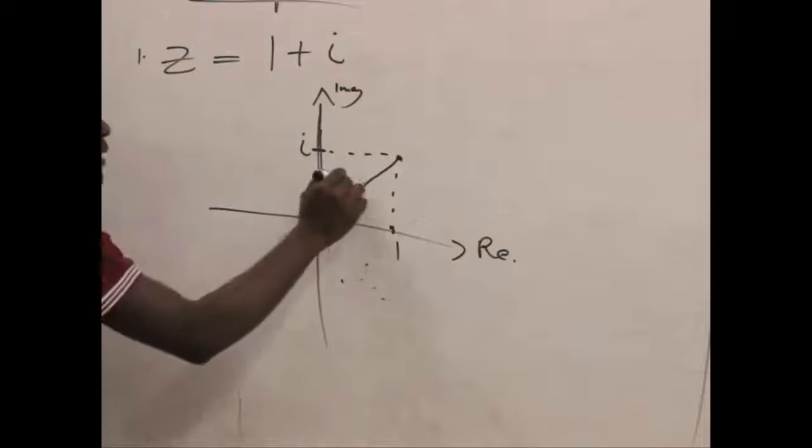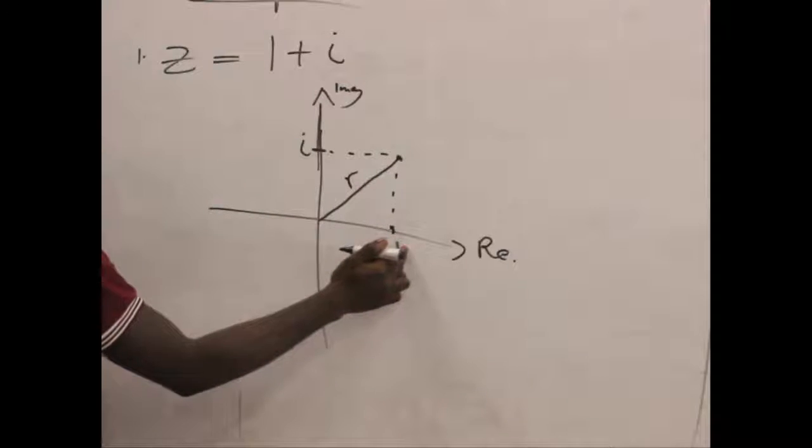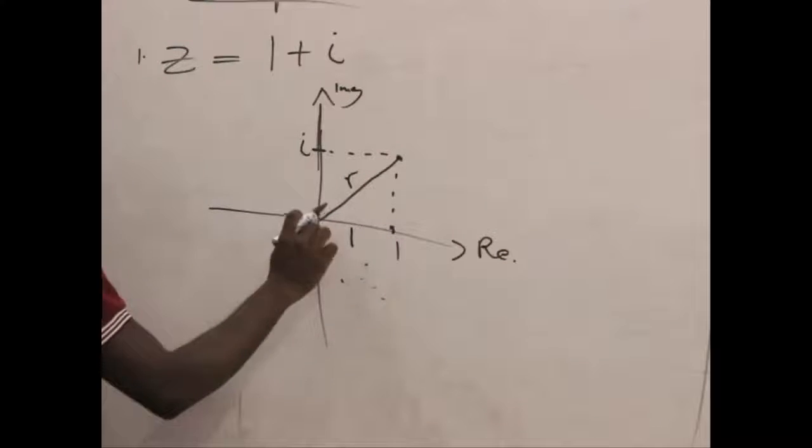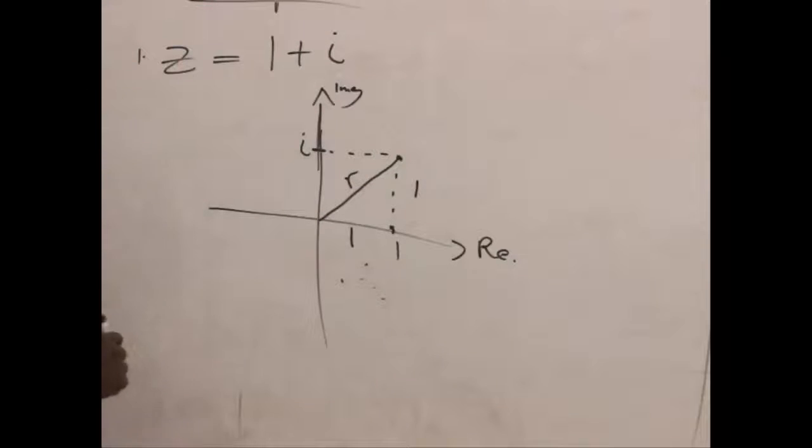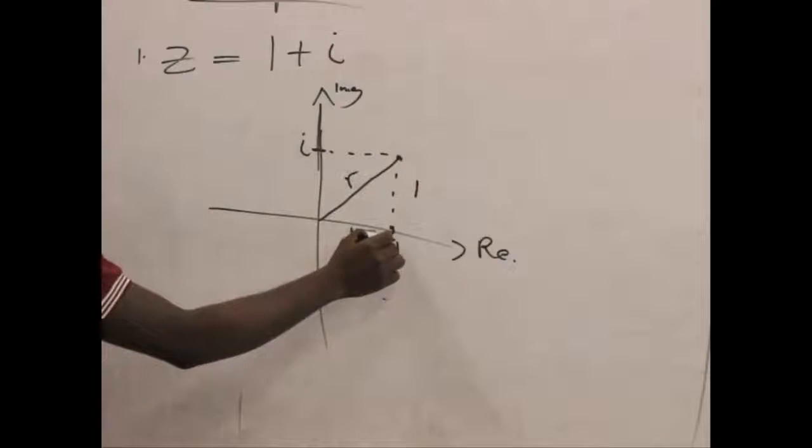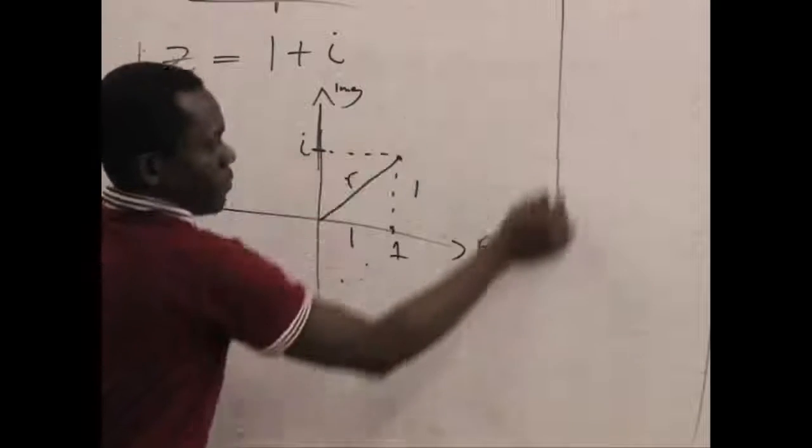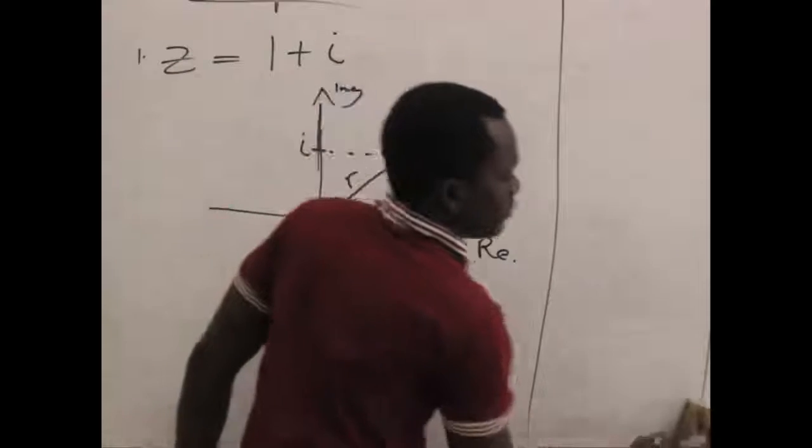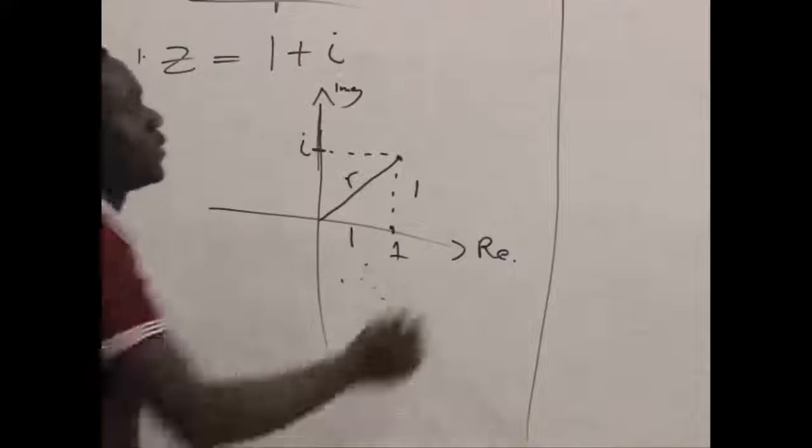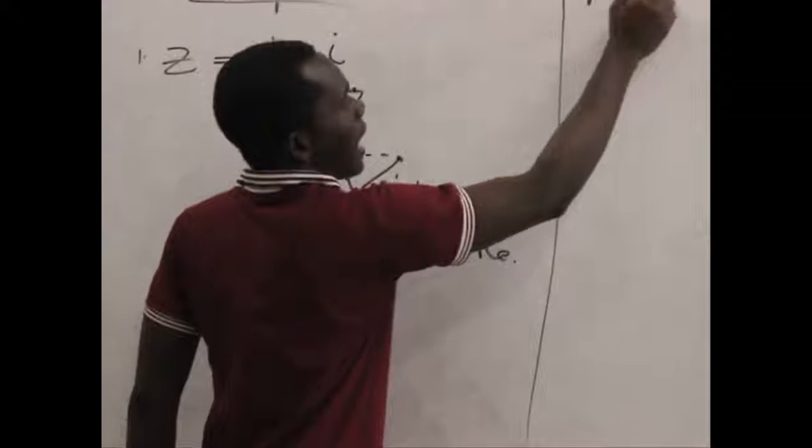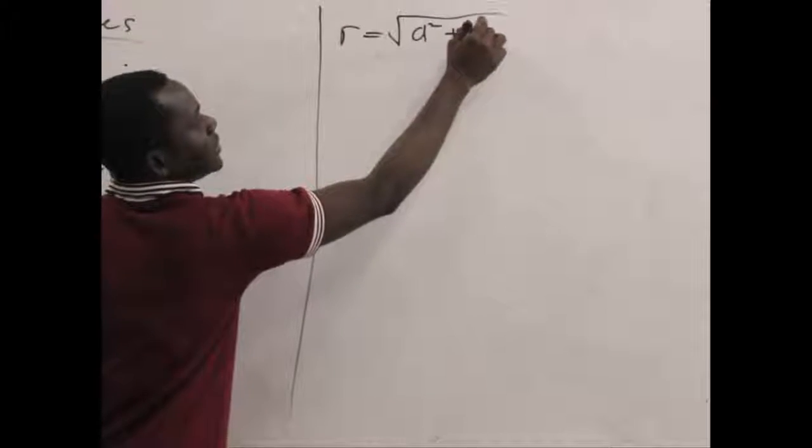And we label the length here R. And we label the distance from the origin to the 1, it's a magnitude of 1. And from the origin to i is also another magnitude of 1. So with this, we can find R. Now let's find out what R would be first. So R was given by the square root of A squared plus B squared.